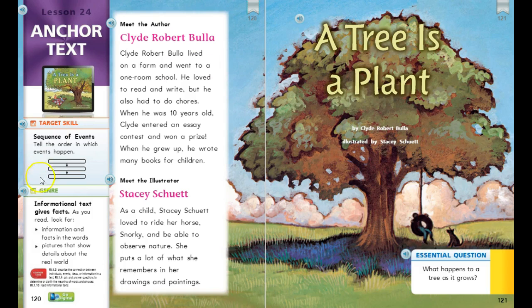Remember, we're looking to tell the order in which events happen — the sequence of events. The genre of this story is informational text. An informational text gives facts about a topic. 'A Tree is a Plant' has labels and pictures that show information about the real world, so it is an informational text.